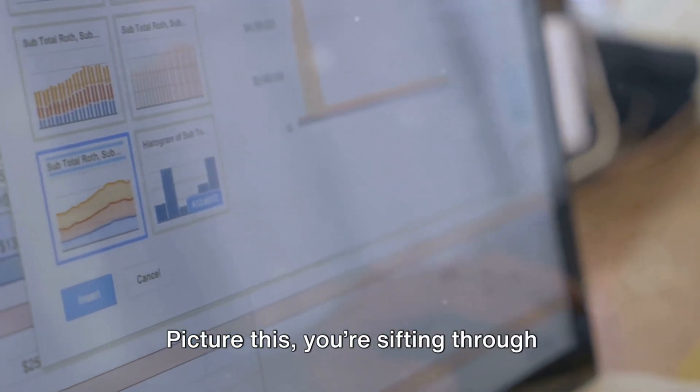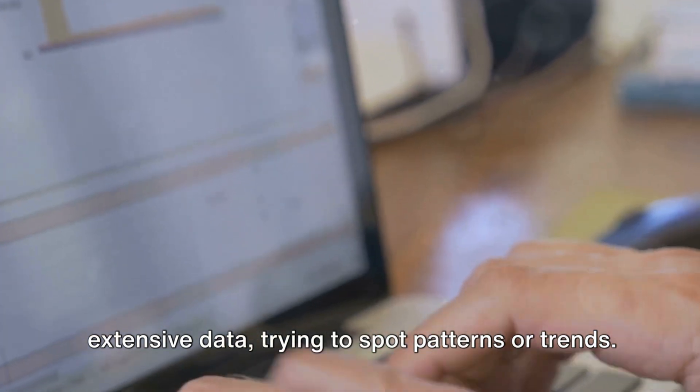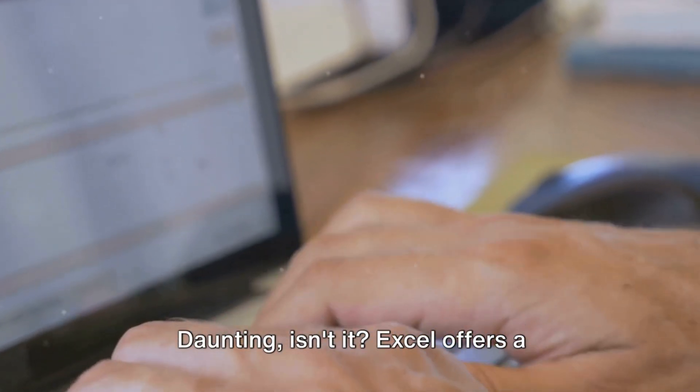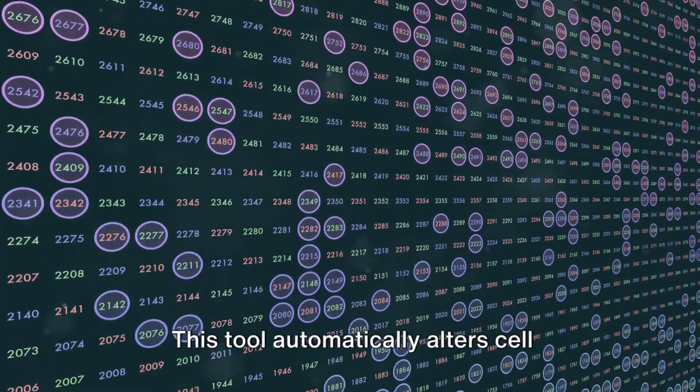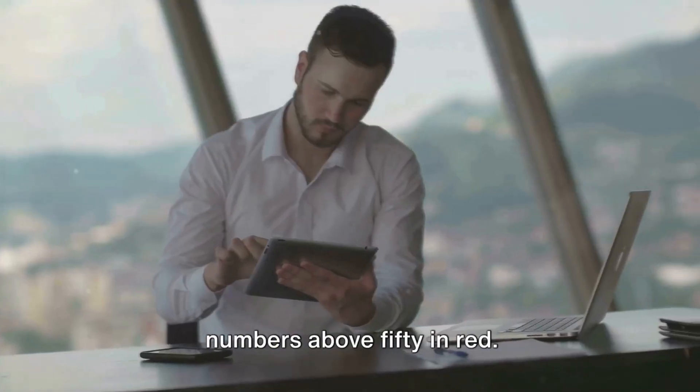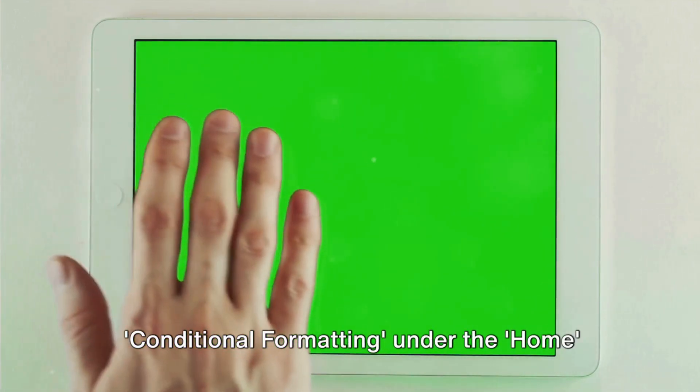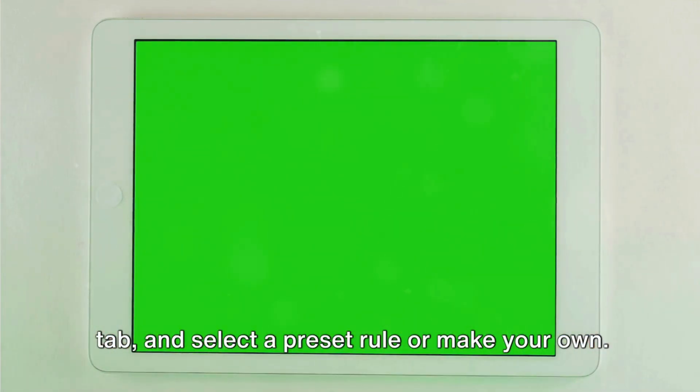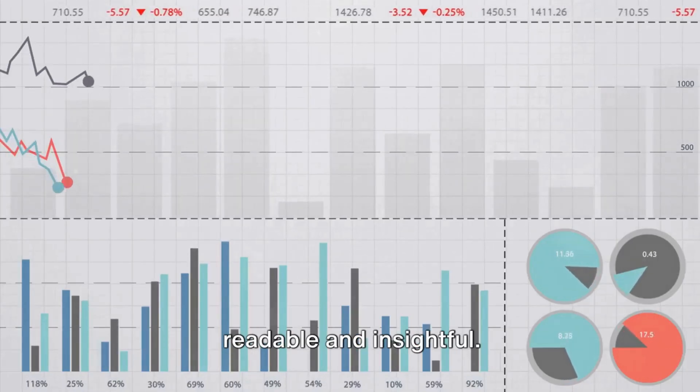It's time to make your data pop with conditional formatting. You're sifting through extensive data trying to spot patterns or trends. Excel offers a solution: conditional formatting. This tool automatically alters cell appearance based on values. For instance, highlighting cells with numbers above 50 in red. Applying it is easy: choose cells to format, click Conditional Formatting under the Home tab, and select a preset rule or make your own.